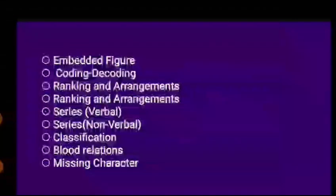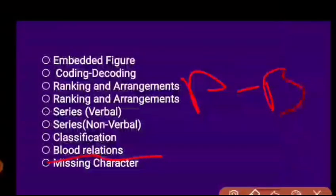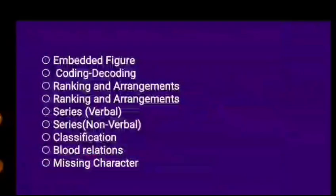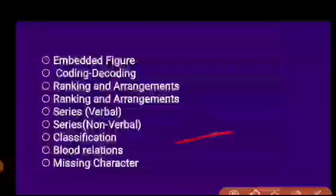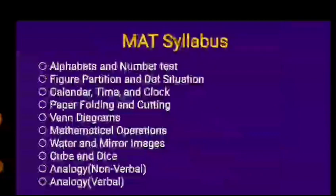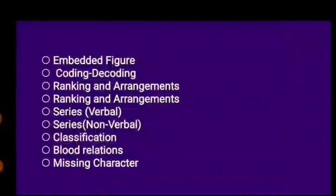Blood Relation is a topic where questions like 'A is B's father and this is his daughter — what is the relationship between them?' are asked. Missing Character is another topic where you find a missing element in a series. These are the basic MAT topics, which you can cover one by one.